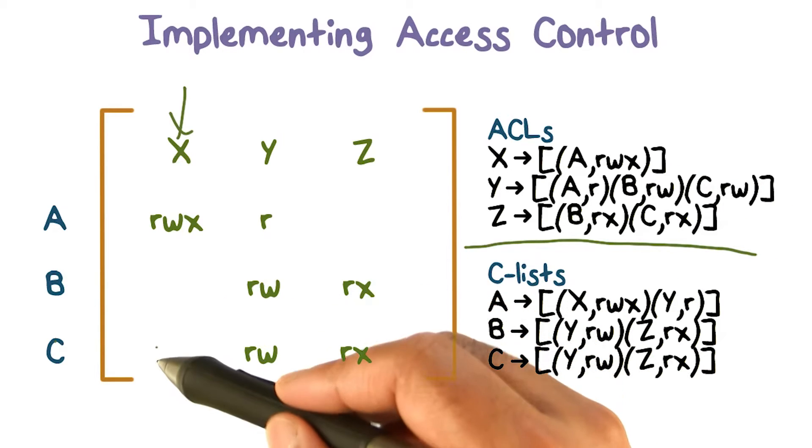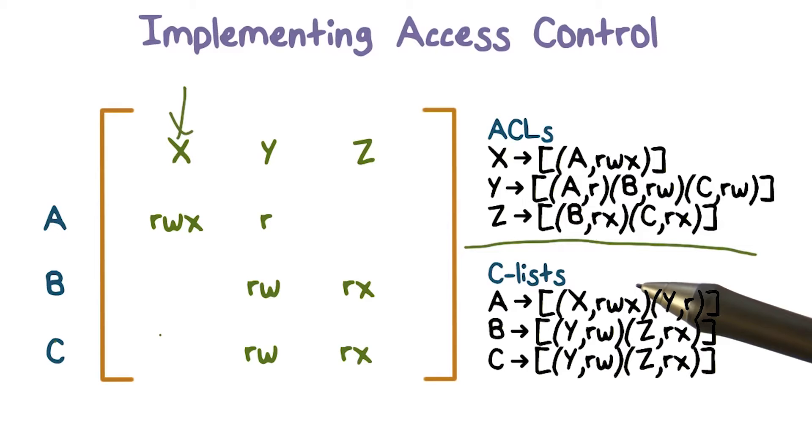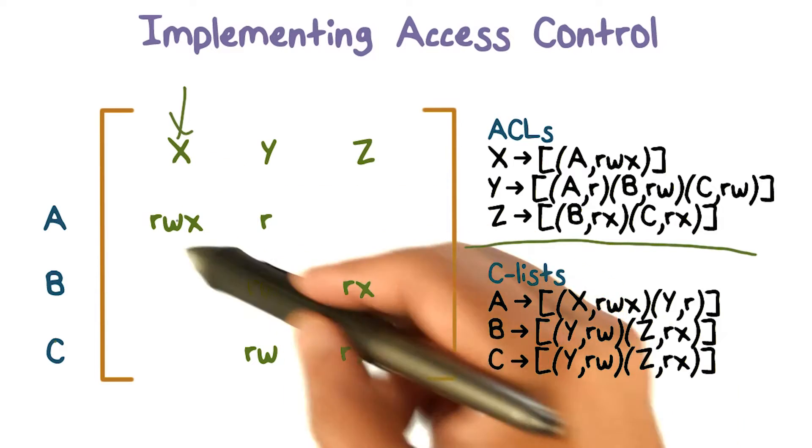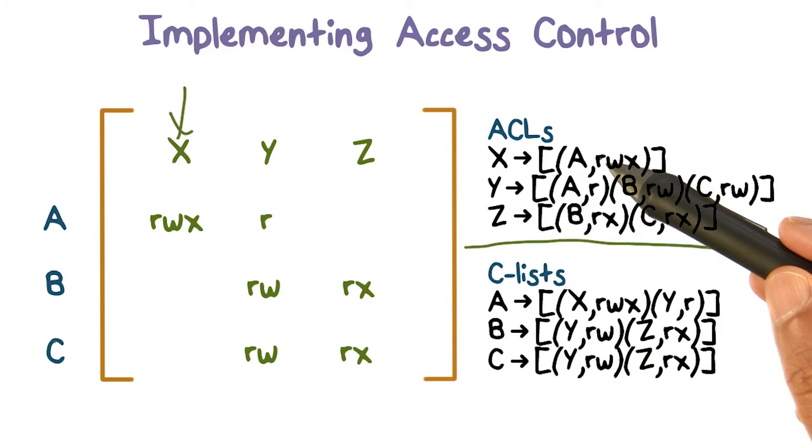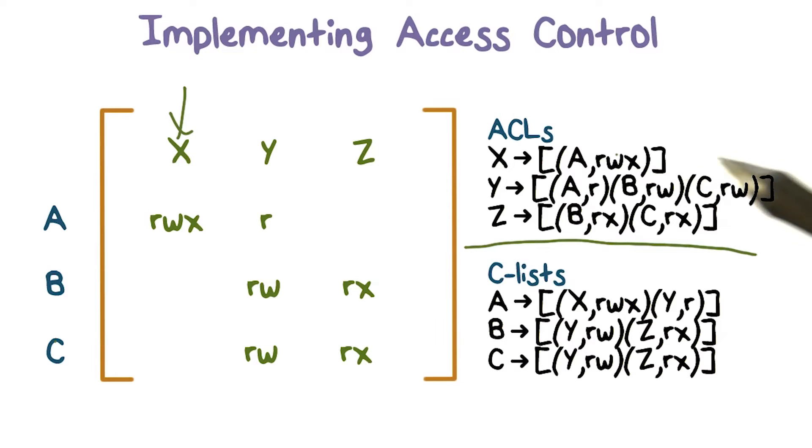In this case, the list is only going to have one entry because B has no access and C has no access. Those are null entries that we don't need to represent. So the ACL for x is just going to be this one entry, where user A can read, write, and execute this object.